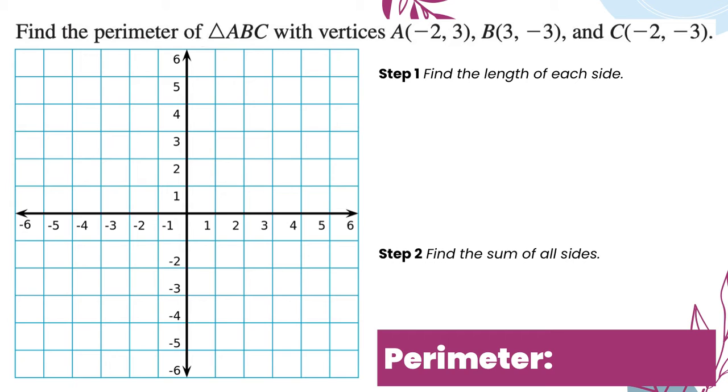When I look at this first one, I have A at negative 2, 3, B at 3, negative 3, and C at negative 2, negative 3. Then I want to go ahead and connect those dots.